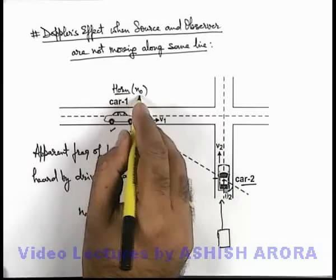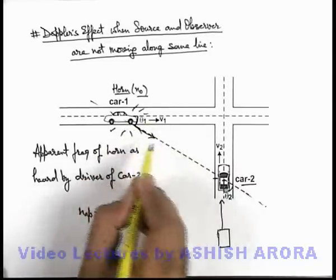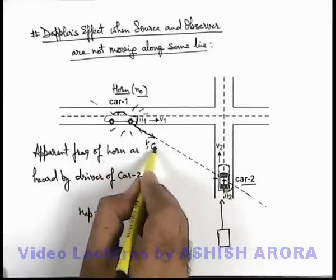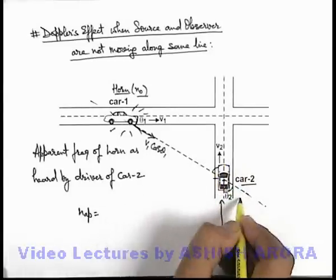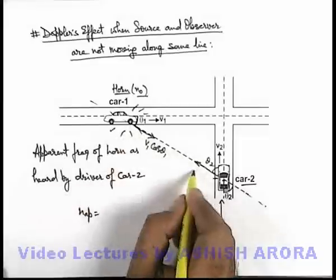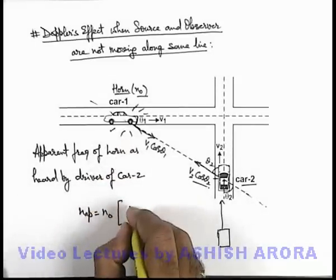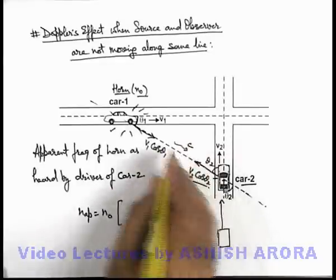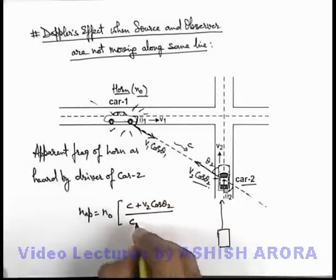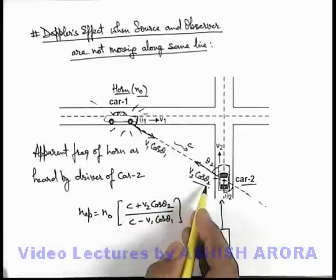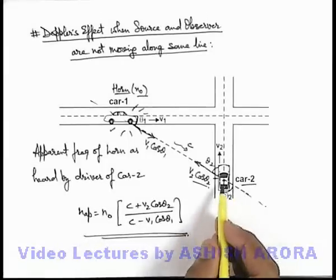This apparent frequency n-apparent can be written as: its actual frequency is n-knot, and along the line of sight, car 1 is moving with speed v1 and this angle is theta1, so we can assume that the source or car 1 is approaching car 2 with a speed v1·cos(theta1). And as car 2 is moving at the instant when the driver is hearing the sound with speed v2 and this angle is theta2, the observer is approaching along the line of sight with speed v2·cos(theta2). So in this situation, apparent frequency can be written as the actual frequency multiplied by — if we consider sound speed to be c — (c + v2·cos(theta2)) upon (c − v1·cos(theta1)), as both are approaching. Here v2·cos(theta2) is taken as the speed of the observer and v1·cos(theta1) as the speed of the source. So this is the apparent frequency recorded by the driver of car 2.